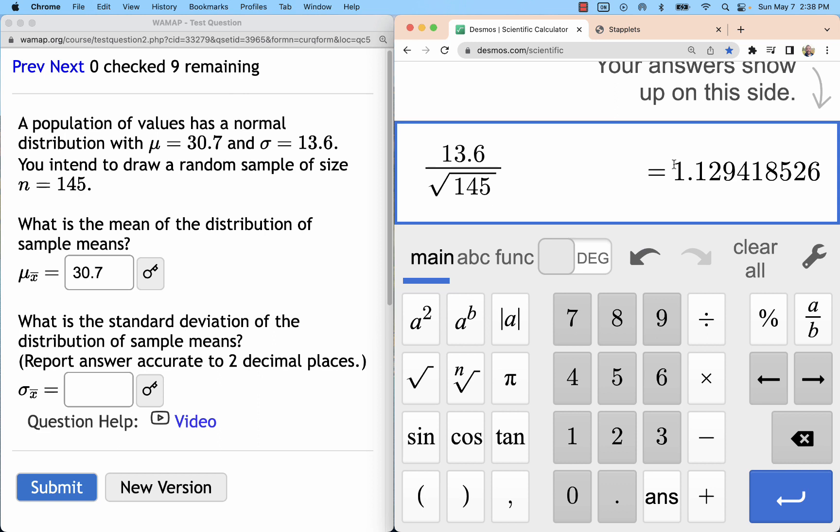We call it standard error. This term is kind of long - it's the standard deviation of the sample means. Looking from one sample to the next, the sample means will have this standard deviation or standard error. This one with two decimal places is 1.13.